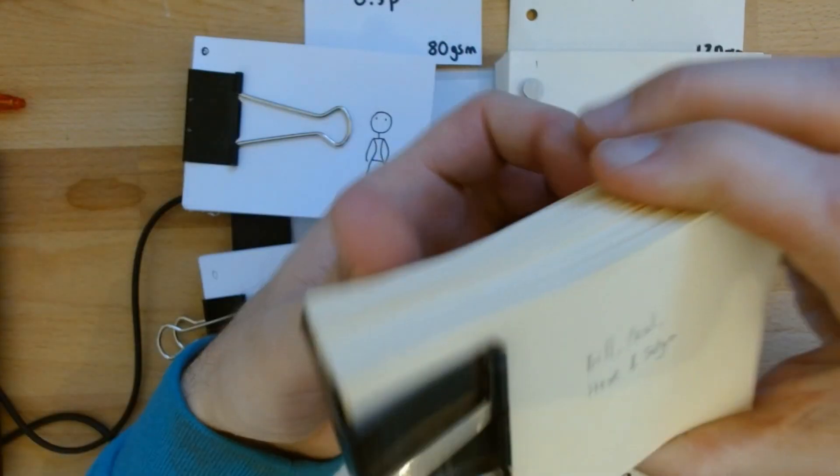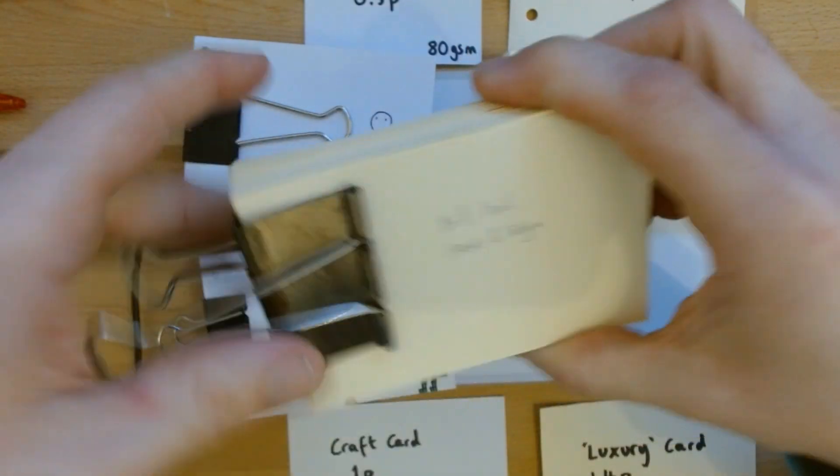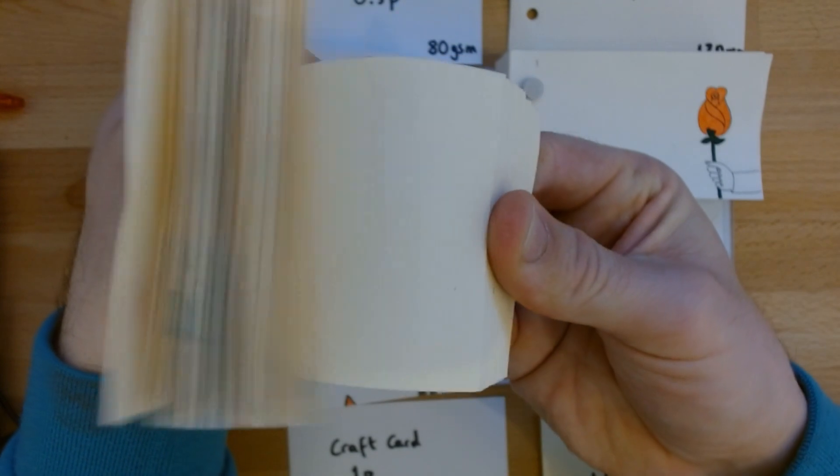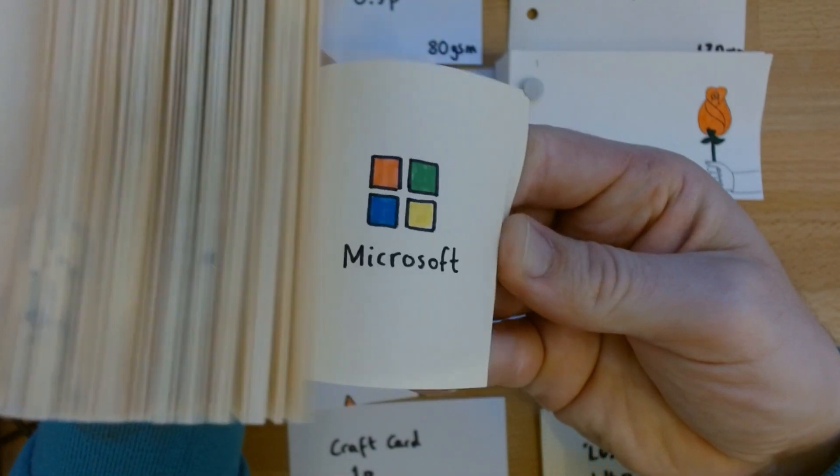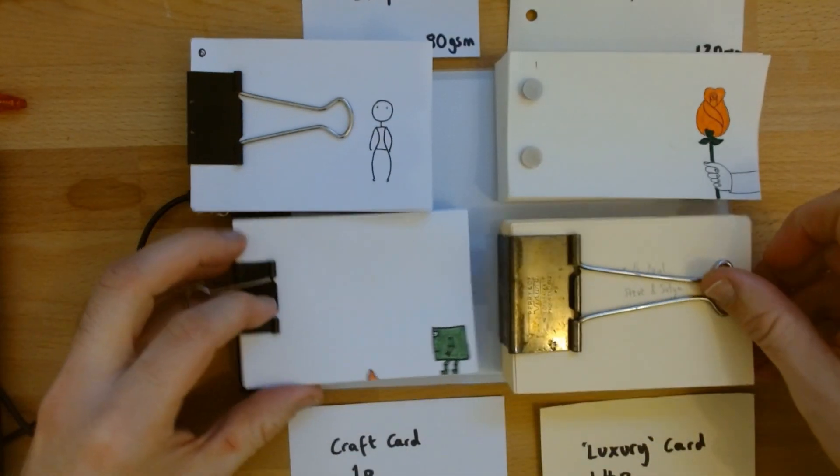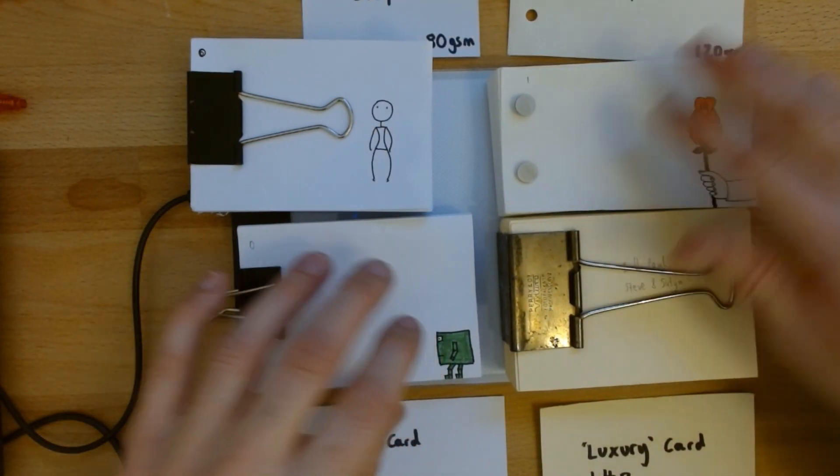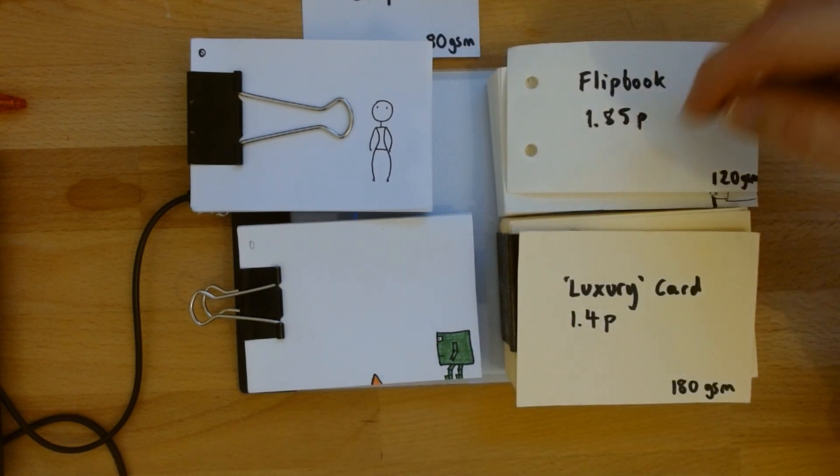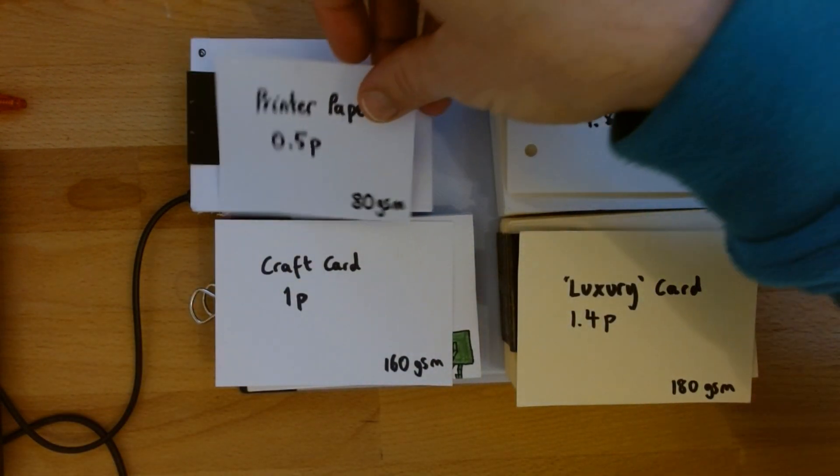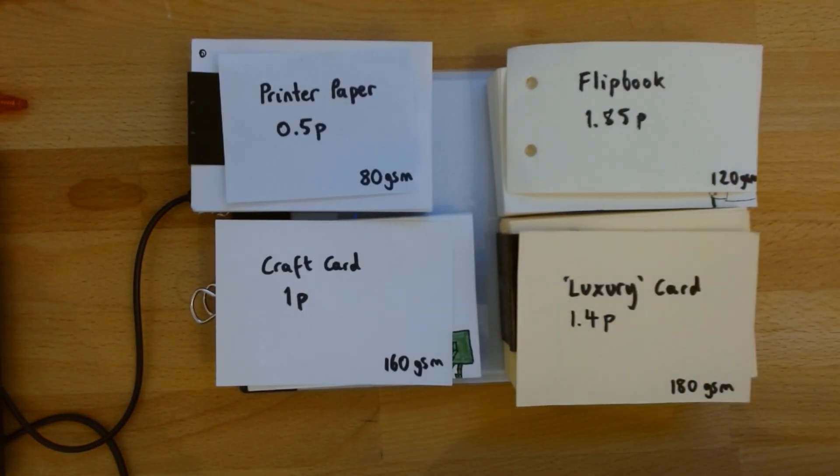And then this is the thickest card. So in terms of the flip, these three are all pretty nice, actually. The flipbook is probably the nicest, but that's mainly because of the size and the fact that it all lines up beautifully, as opposed to the thickness of the paper.